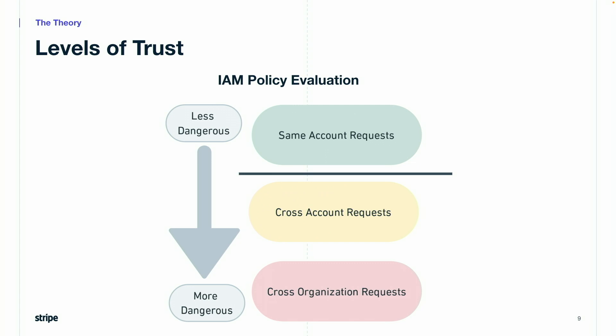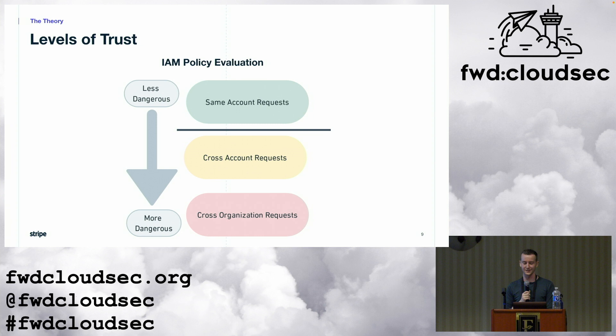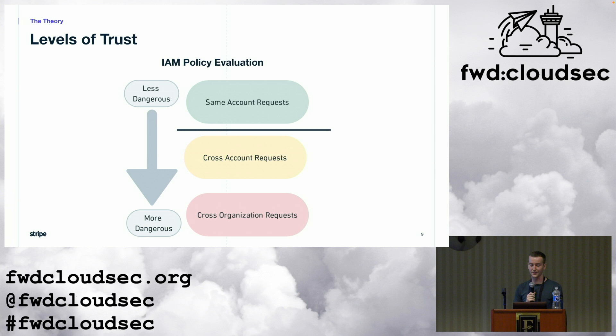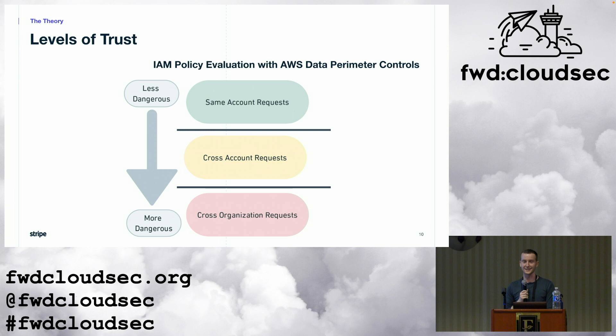The problem is that IAM policy evaluation has only two buckets of requests: requests within an account and requests across accounts. Requests within an account succeed if there's an allow in the principal or in the resource for most resource types. Requests across accounts succeed if there's an allow in the principal and in the resource. But it doesn't matter if the other account is within your AWS organization or not — the trust relationship is created the same way. We should trust accounts outside of our organization less, but AWS does not make this the default. This is the goal of the AWS data perimeter: to draw a line between cross-account requests within our organization and cross-account requests outside of it.